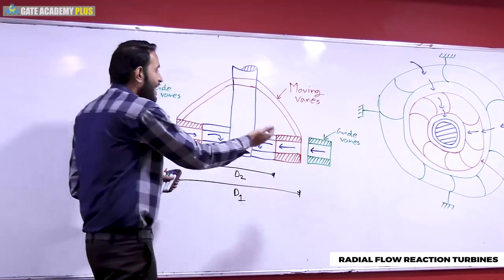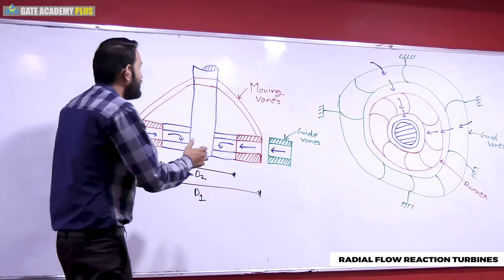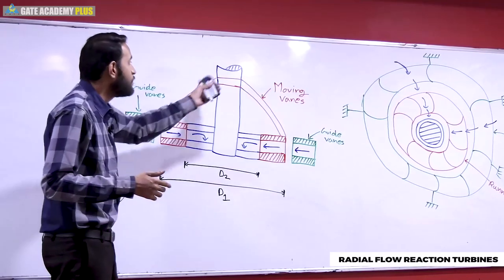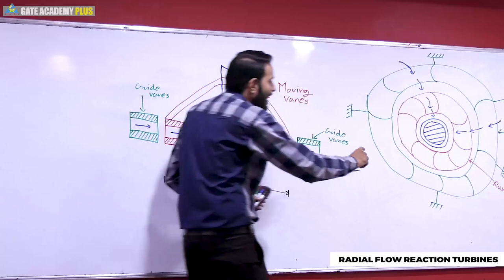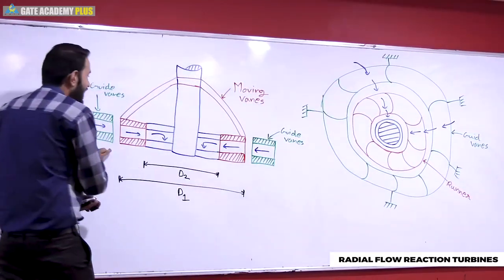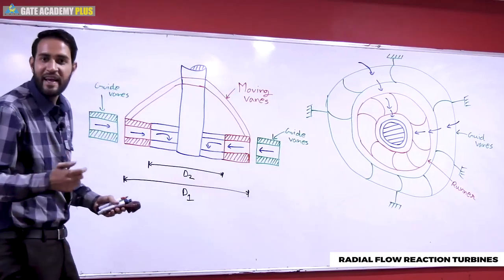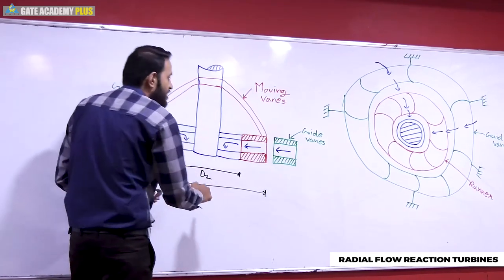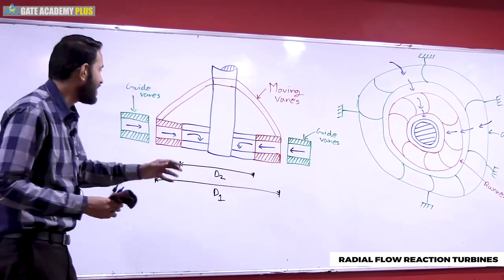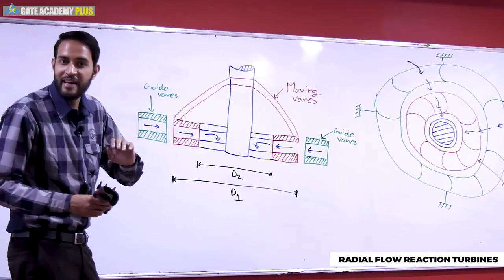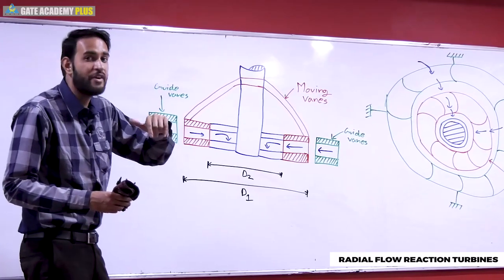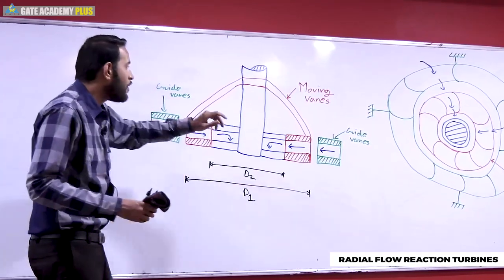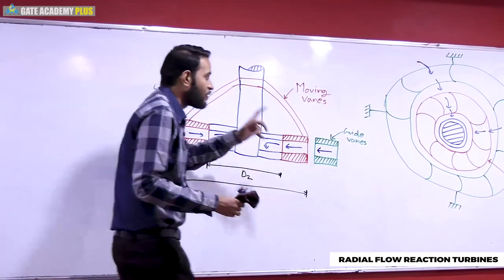We can see the side view: the shaft in the center, the runner with moving vanes, and the outer guide vanes which direct flow to the runner. Flow goes first through guide vanes, then moving vanes rotate, then discharge occurs. For numerical analysis, we know inlet and outlet tangential velocities using the expression VW1·U1 ± VW2·U2. We have two diameters D1 (outer) and D2 (inner) to calculate U1 and U2.